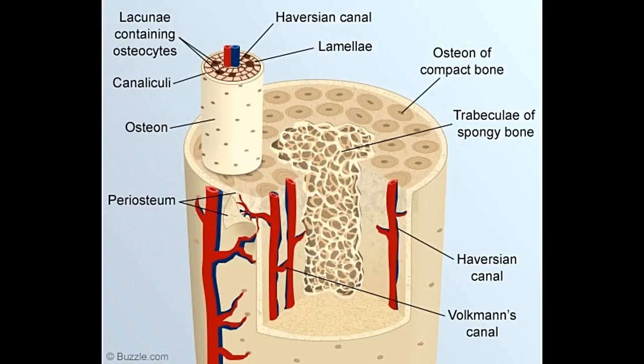The compact bone is made up of osteons that are tightly packed. The osteons comprise an osteonic, Haversian canal, which is a central canal that contains a few blood vessels and nerve filaments that are surrounded by concentric rings of matrix called lamellae. Between these lamellae lie small chambers, lacunae, that contain osteocytes, mature bone cells, in a concentric arrangement around the osteonic canal.